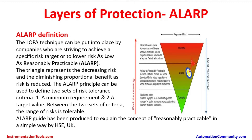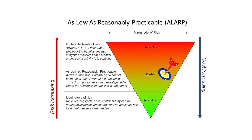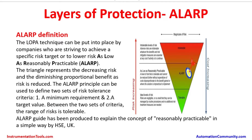The ALARP guide has been produced to explain the concept of reasonably practicable in a simple way by the HSC Health Safety Environment Committee of the United Kingdom. As the triangle shows, risk increases as plants get older — due to maintainability issues, spare parts availability, and aging equipment. For plants 20–25 years old, the original identical spares may no longer be available.